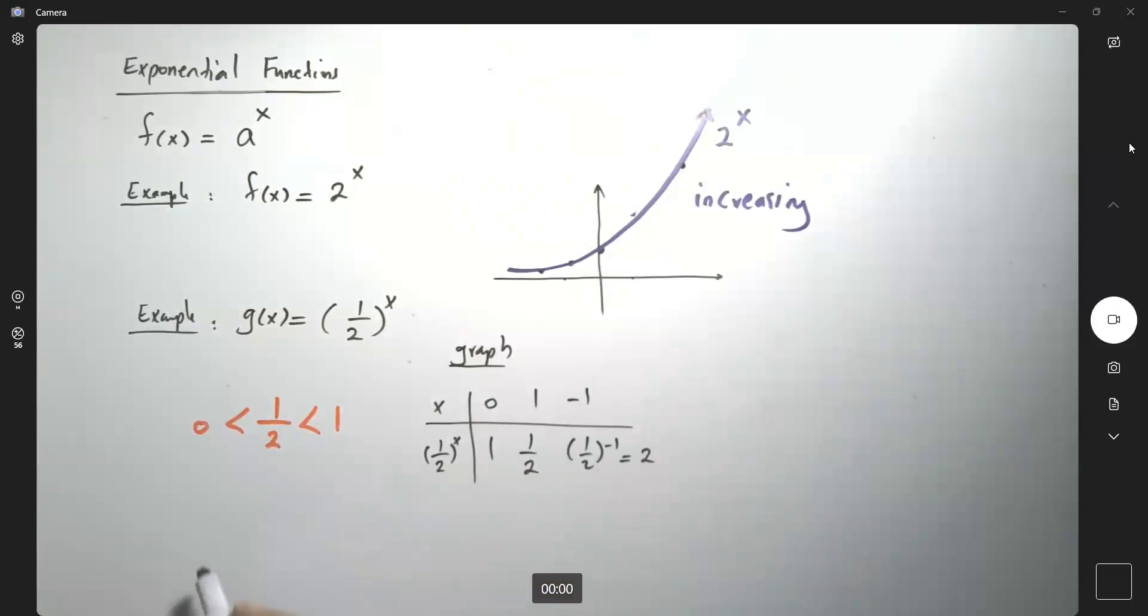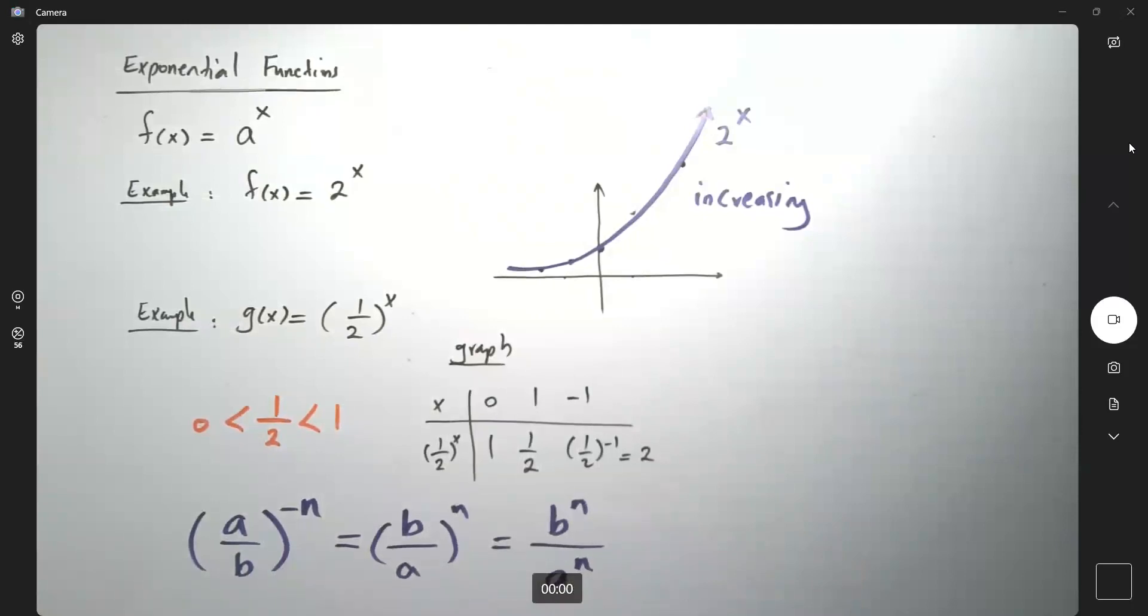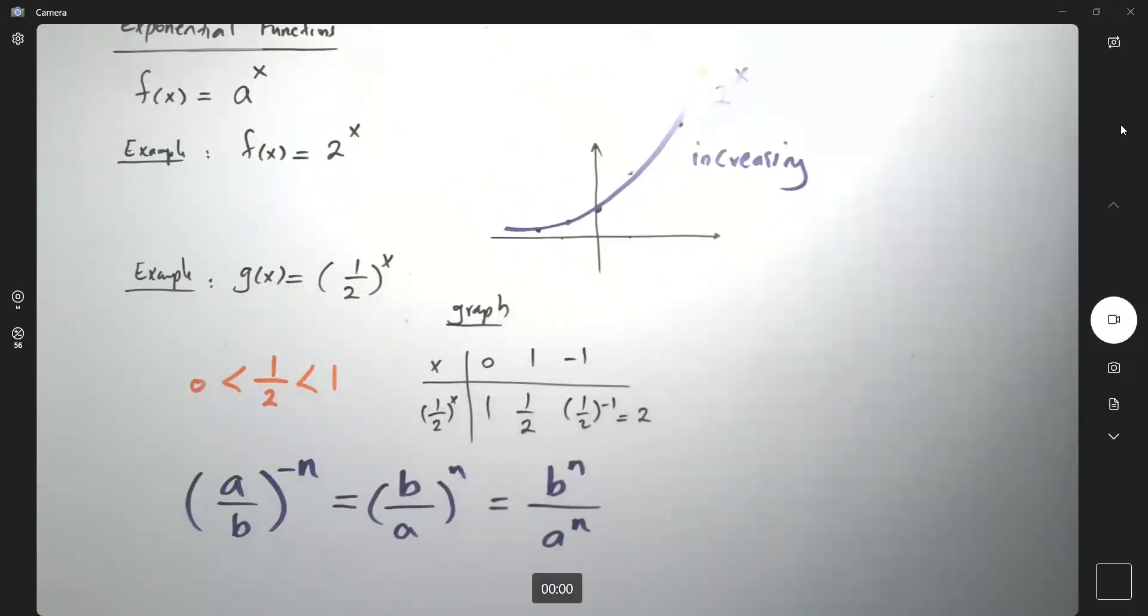Algebra, algebra. You have (a/b)^(-n), it becomes (b/a)^n or b^n divided by a^n. This is what we have here.